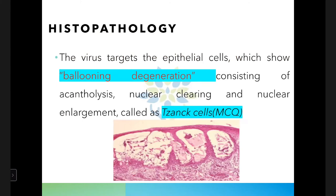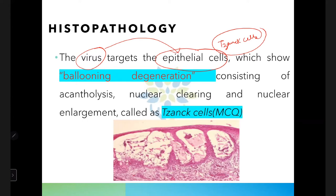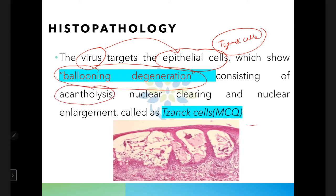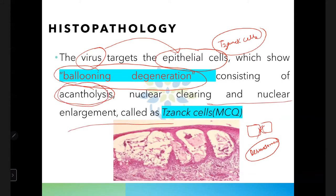Histopathologically, the herpes simplex virus targets epithelial cells called Tzanck cells. Once the virus targets these cells, they become inflated — this is called ballooning degeneration. There will also be acantholysis, meaning the cell-to-cell junctions such as desmosomes are lost, along with nuclear enlargement. The affected cells are called Tzanck cells.